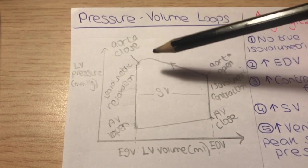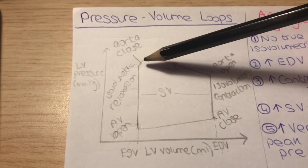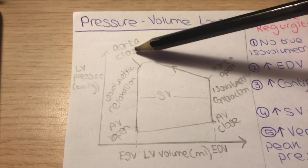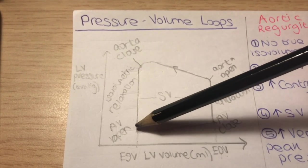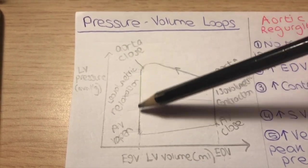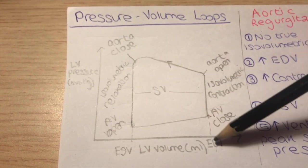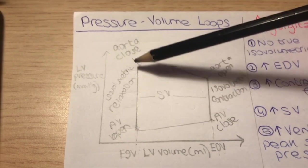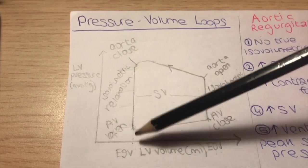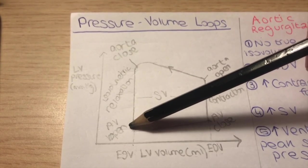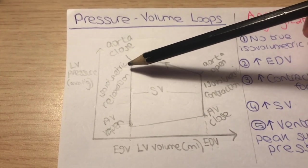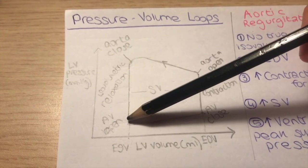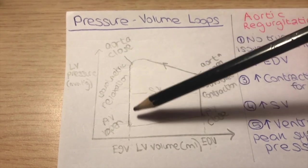At this point, the aortic valve closes because the aortic pressure becomes higher than the pressure in the ventricle. This is referred to as isovolumetric relaxation — the volume remains the same but the pressure is decreasing. This is because the aortic valve is closed and the AV valve still isn't open, so the ventricle is relaxing but the blood in it is not going anywhere and no blood is entering.